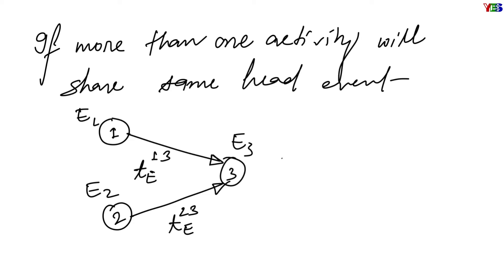Now, what if more than one activity will share the same head event? Let us consider two activities 1-3 and 2-3 having 3 as a common head event. In this case, we will calculate earliest possible time at 3 by keeping both activities in mind, since after completion of both activities only the successor activity could start. Let us say 1-3 is taking 4 hours and 2-3 is taking 2 hours. So the successor activity cannot start after 2 hours or after 3 hours, but can start after 4 hours only, because before 4 hours activity 1-3 will be in process and we will have to wait for it. So in this example, earliest possible time at event 3 will be 4 hours.